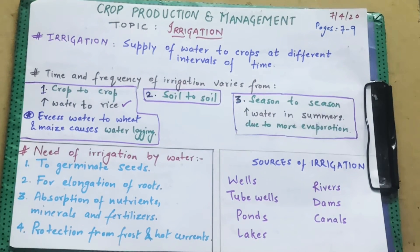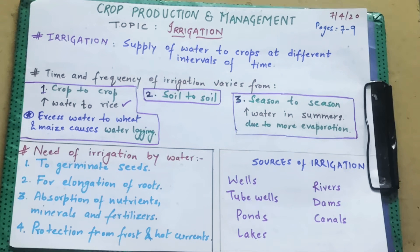Irrigation is the supply of water to crops at different intervals of time. That means after a fixed interval you have to give water once again, so they will grow.